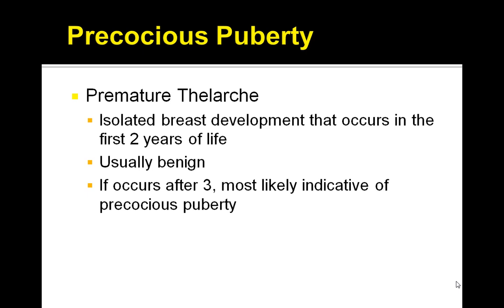What are some of the basic causes of peripheral precocious puberty? Congenital adrenal hyperplasia, adrenal tumors, polyostotic fibrous dysplasia also known as McCune-Albright syndrome, gonadal tumors, and exogenous estrogen or oral OCPs, as well as ovarian cysts.